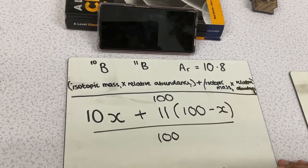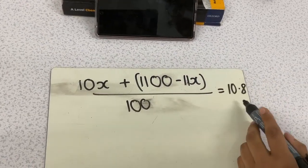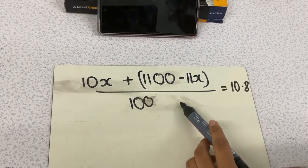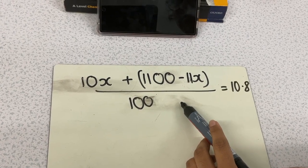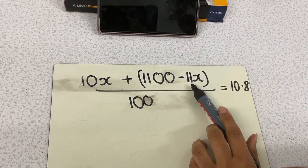When we expand this equation, we get this lovely equation. All we've done is expanded the 11 into the equation that was in the brackets. So we did 11 times 100, and then we did 11 times x to get 1100 minus 11x.